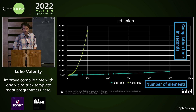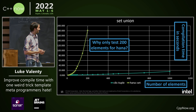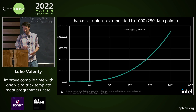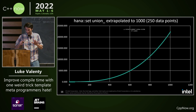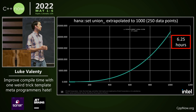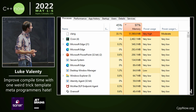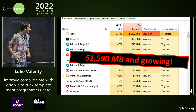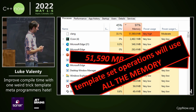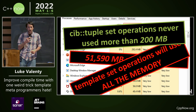On the y-axis, we have compilation time in seconds. Why did I only test 200 elements for HANA? Well, this is the extrapolated amount for if I did go all the way up to a thousand — it's kind of N to the power of three, and it would take six hours. But the real reason is because as it was running, it was using more and more memory, ending up using more than 51 gigabytes, and I had to kill it at 400 elements. The CIB tuple set operations never use more than 200 megabytes.